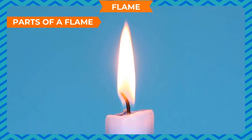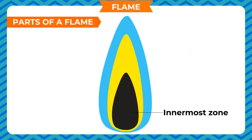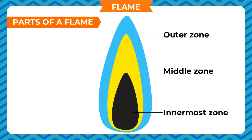A candle flame has three zones. The innermost or dark zone is the least hot part of the candle flame. It appears black due to the presence of unburnt wax vapor. The middle zone is the major part of the flame with moderate temperature; unburnt wax gives out carbon particles which burn to give yellow light, making this region yellow and luminous. The outer zone is where complete combustion takes place, making it the hottest region. The color of this zone is blue.